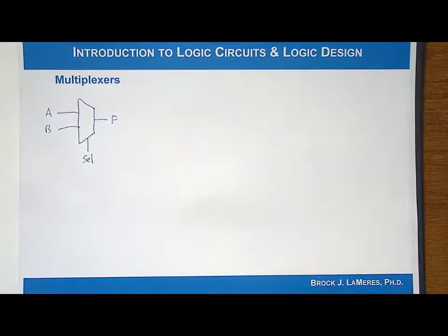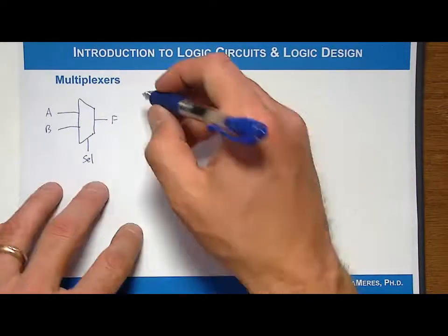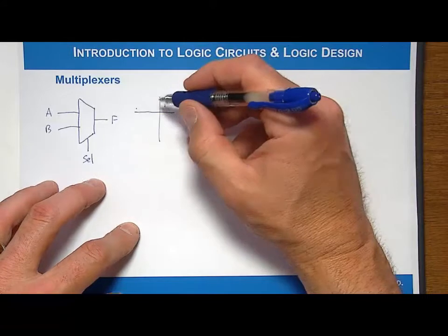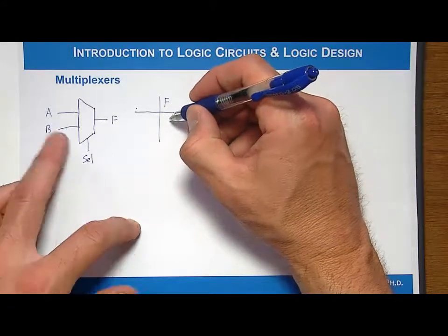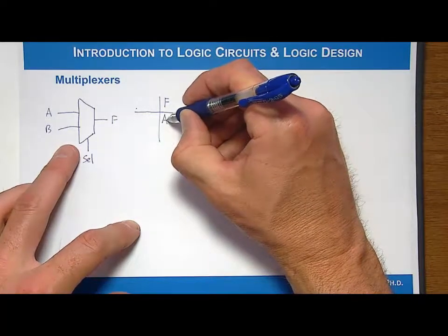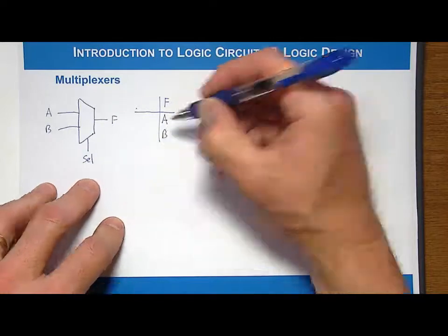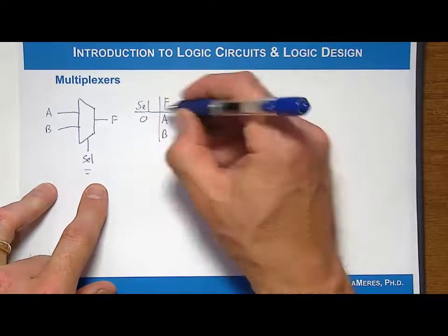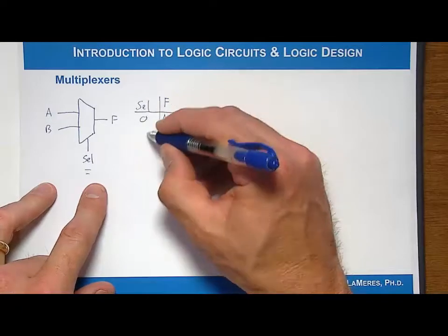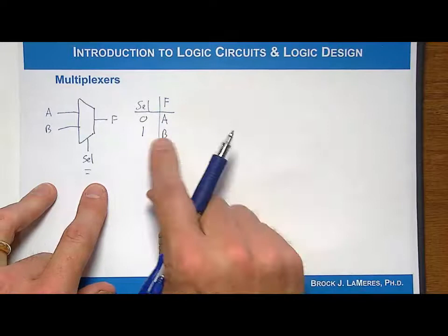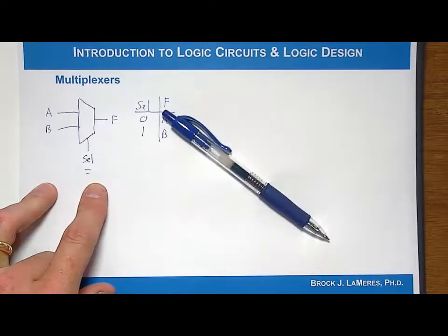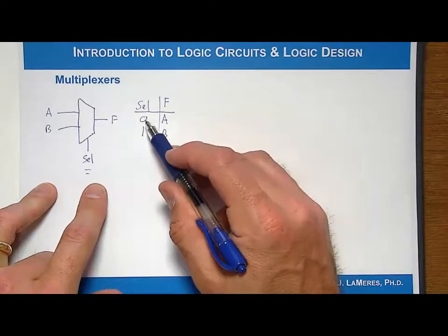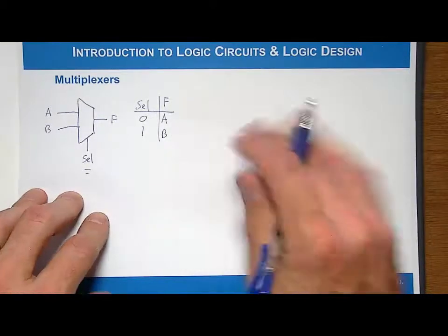The truth table can be written as follows. I'm going to list what the output is, except that the output is actually one of the inputs. For example, F gets A under a certain situation, and otherwise it gets B. The situation is the value of the select line. So when select is 0, the output gets A, and when select is 1, it gets B. This truth table is a little different than what we've seen before, because it doesn't explicitly use ones and zeros for the output value. But it does describe the functionality of what we're trying to do.